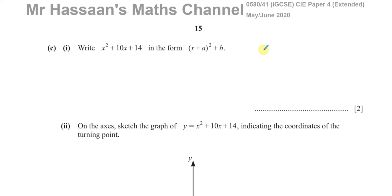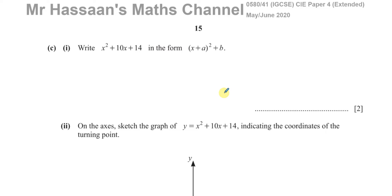Welcome back to Mr. Hassan's Maths channel. This is question number eight, part C from the Cambridge IGCSE May/June 2020 Paper 4 Variant 1, from the 0580 syllabus. Parts A and B were answered in a separate video because they were about trigonometry. This part is about graphs of functions, specifically completing the square.